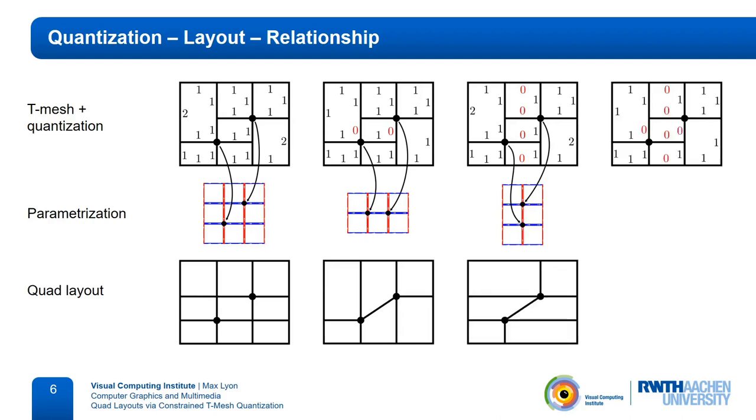Going even coarser, by assigning zero lengths to the arcs in both directions, is not possible, as this would force the two layout vertices onto the same position in the parameterization. This would cause inverted or degenerate elements, and thus prevent the extraction of a valid quad mesh.